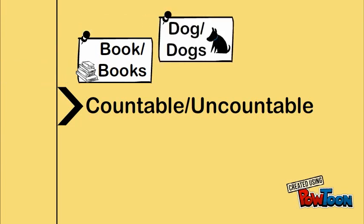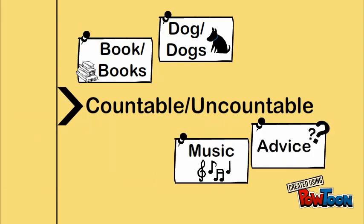Uncountable nouns do not have a plural form. Examples of uncountable nouns include music and advice. Secondly, you should determine whether the noun you are using is definite or indefinite.